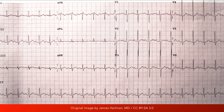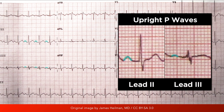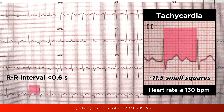The ECG characteristics of sinus tachycardia are essentially the same as sinus rhythm, but at a faster heart rate. An upright P wave of constant morphology precedes every QRS complex, and a QRS complex follows every single P wave. The heart rate in a patient with sinus tachycardia is greater than 100 beats per minute, which correlates with an RR interval of less than 0.6 seconds.